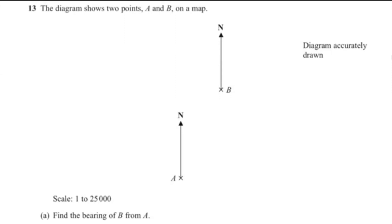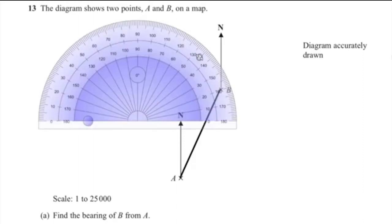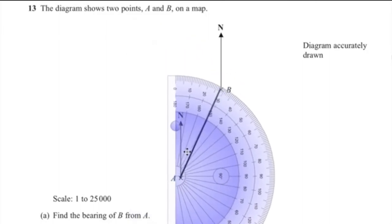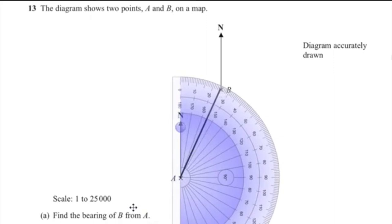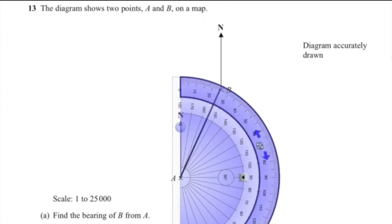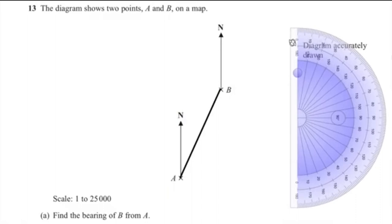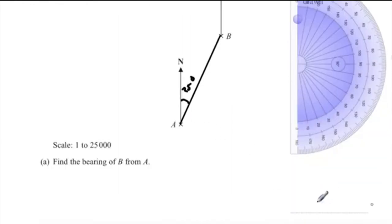Question 13A: find the bearing of B from A. Draw a straight line from A to B, place a protractor at point A, and measure the angle heading towards B. The angle is 25 degrees, so the bearing of B from A is 025 degrees.